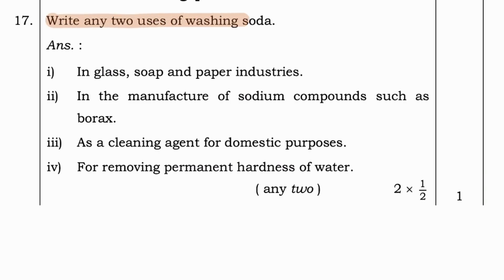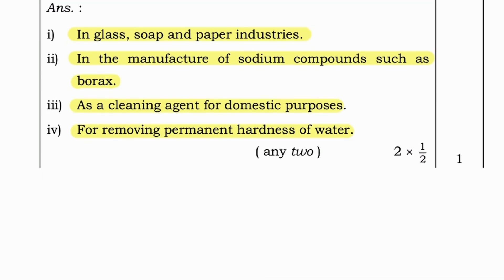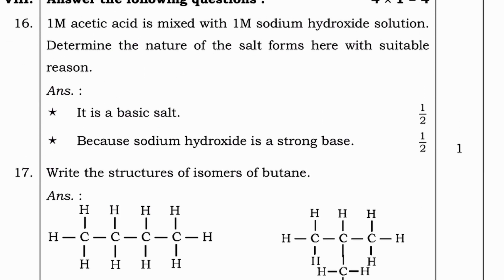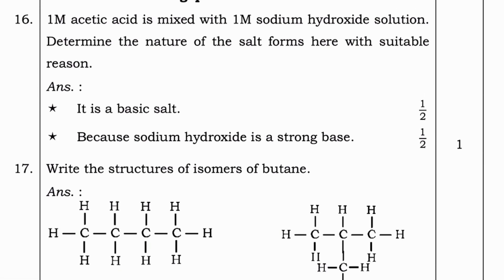Next question. Write any two uses of washing soda. Answer. In glass soap and water industries, in the manufacture of sodium compounds such as borax, as a cleaning agent for domestic purposes and for removing permanent hardness of water.